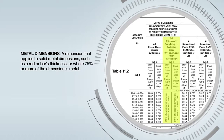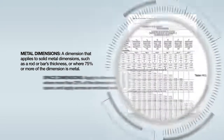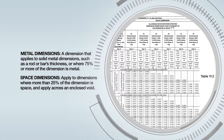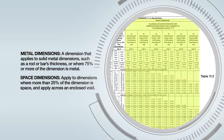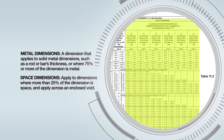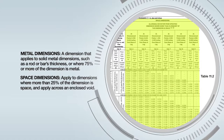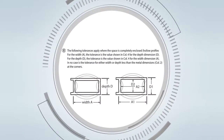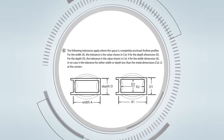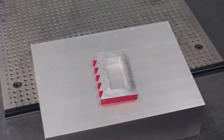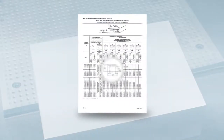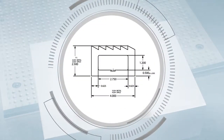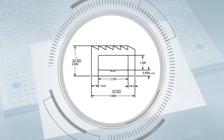Metal dimensions are just as the name suggests — a dimension that applies to solid metal. The applicable tolerances are found in columns 2 and 3. Column 3 is specifically for metal dimensions that surround an enclosed void. For a hollow profile with an enclosed void, the wall thickness tolerances are found in column 3. Space dimensions are used for hollow profiles and apply across an enclosed void. Tolerances for space dimensions are found in columns 4 through 9, and the column you need is based on where along the profile you are measuring. Footnote 8 for table 11.2 also contains important information on how to determine the width and depth space dimension tolerances.